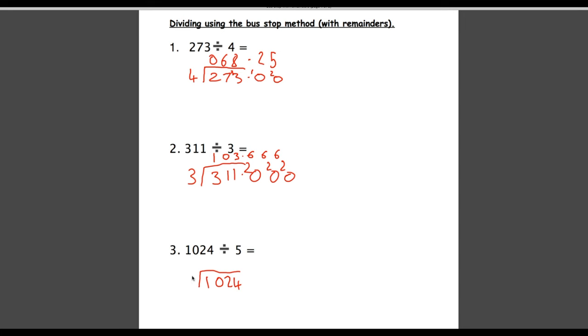1024 divided by 5. How many 5s go into 1? 0. How many 5s go into 10? 2. How many 5s go into 2? Again is 0. How many 5s go into 24? 4 remainder 4.